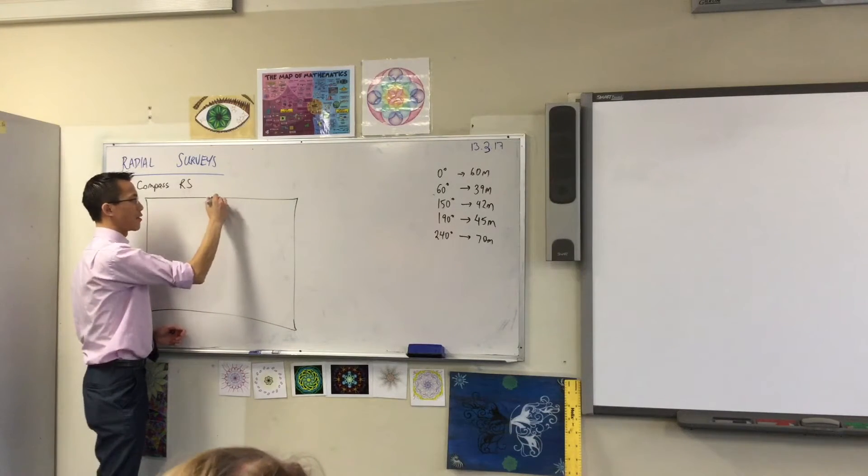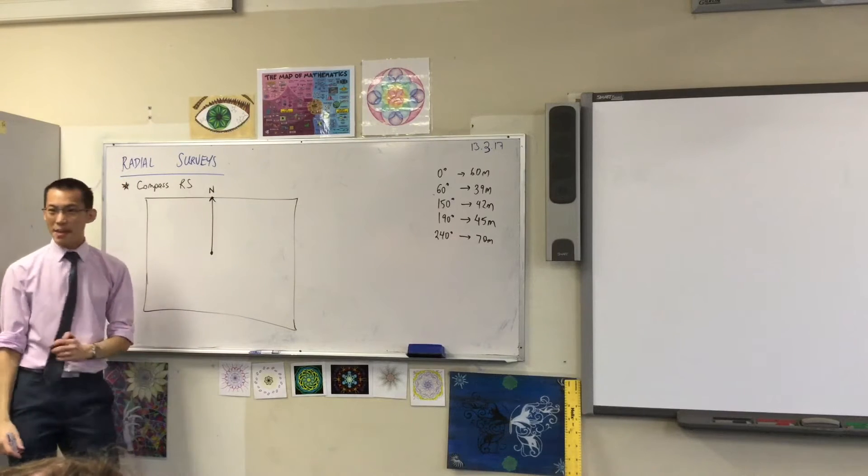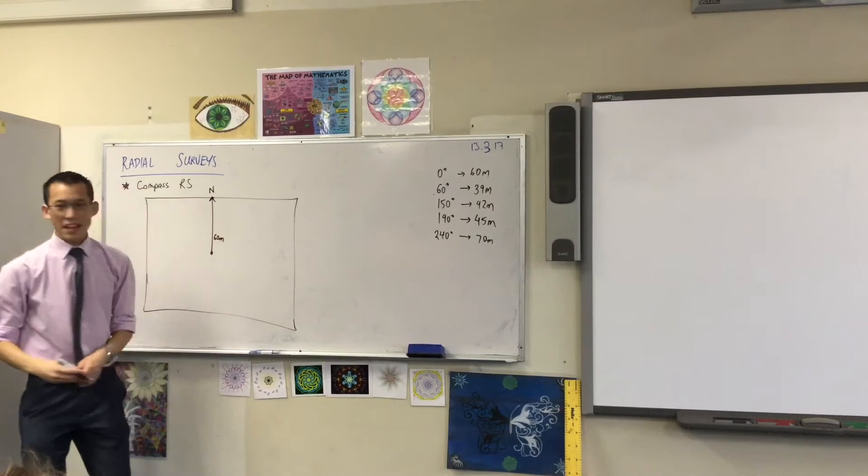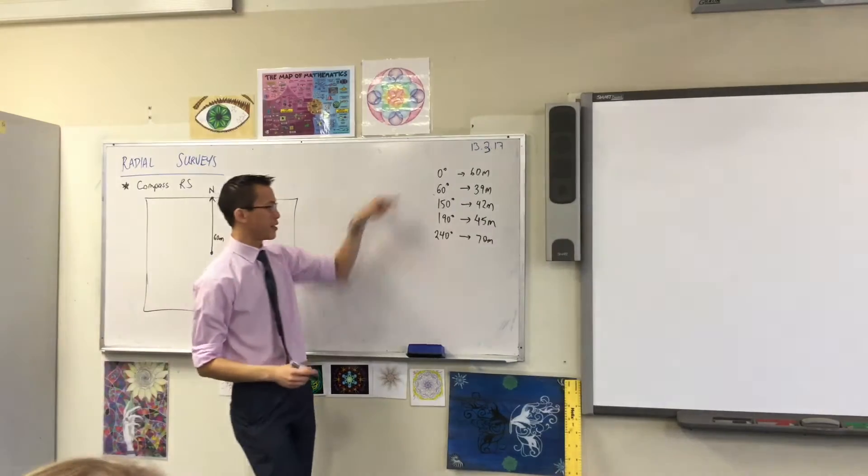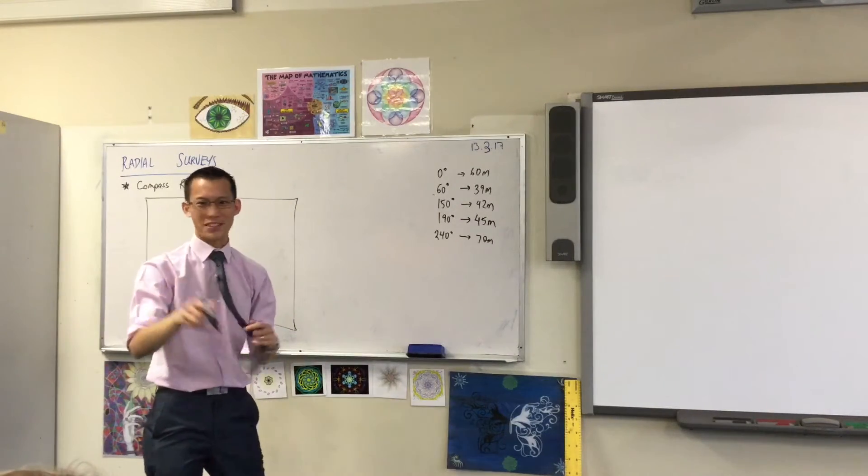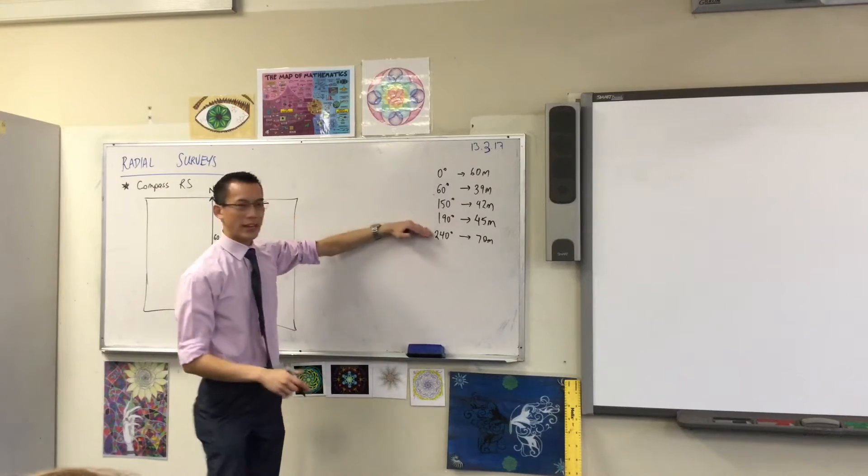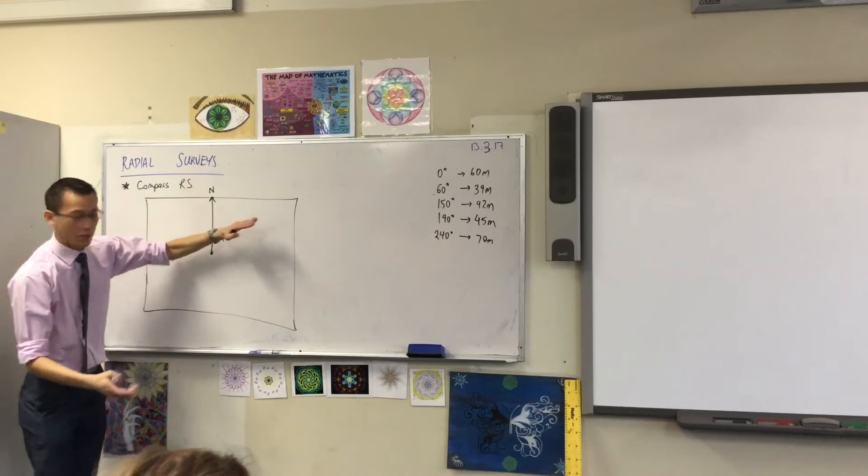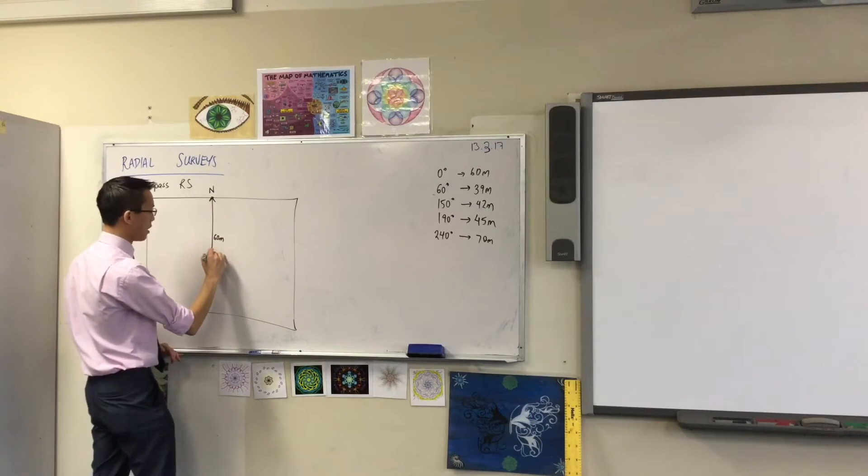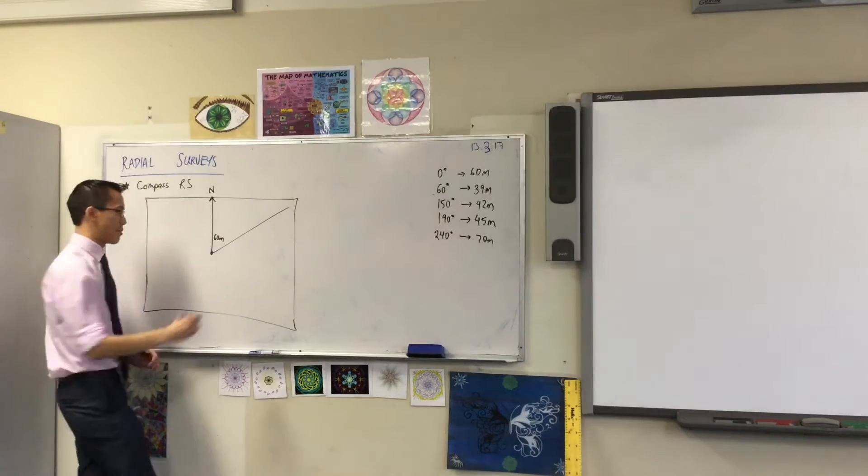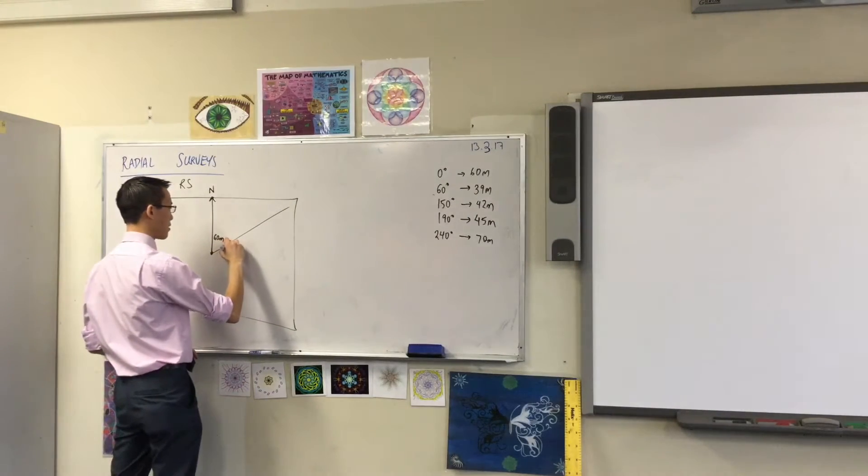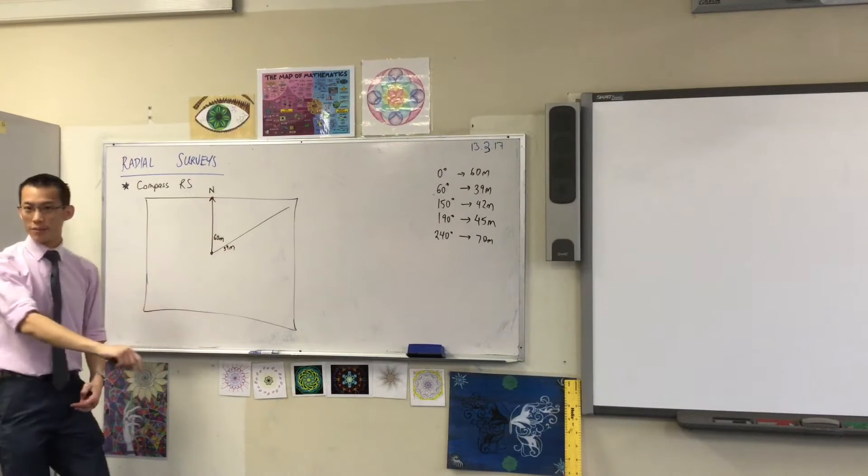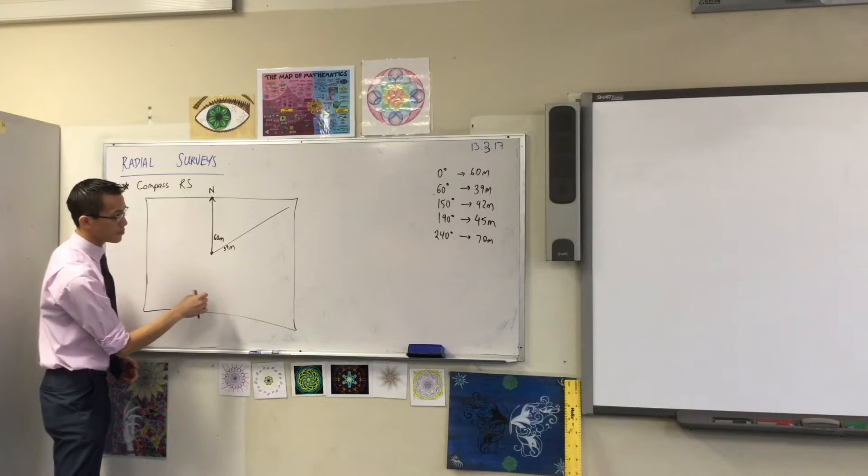So this is my person who's going north. And they measured out 60 meters. Then I've got someone who went 60 degrees. I've got them listed actually in a slightly different order. I've got these listed going in which direction, clockwise. So I'm going to go 60 degrees. I think that's roughly here. And that's going to be 39 meters. I'm going to keep going all the way around until I've done all of my measurements.